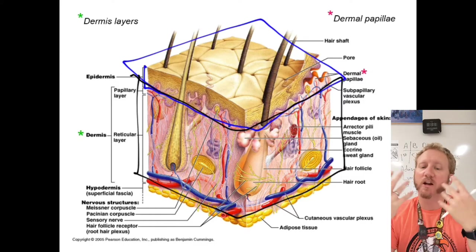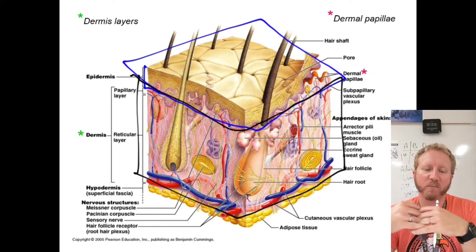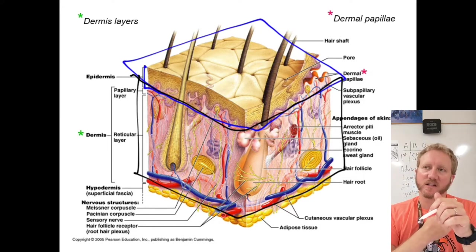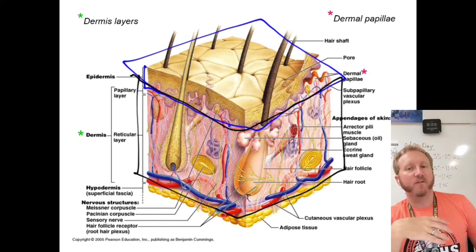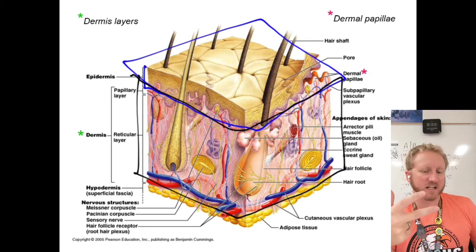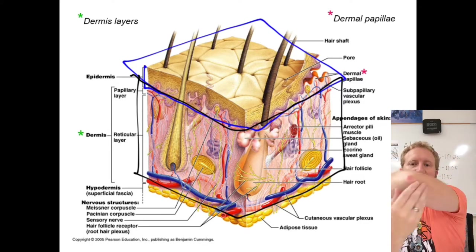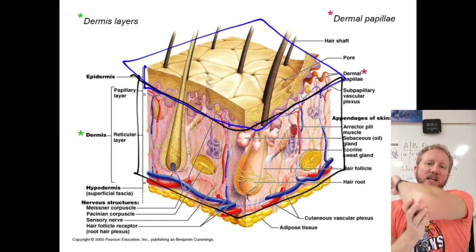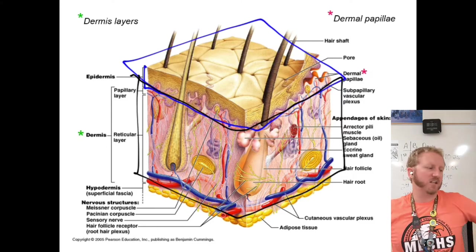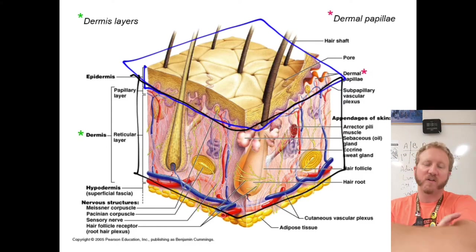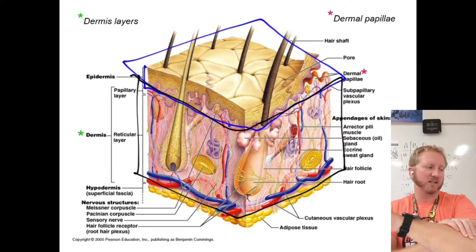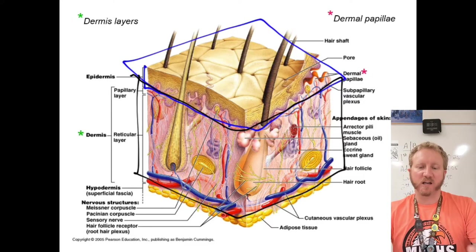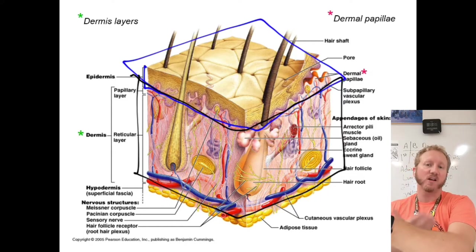The immune response is really mounted at the dermis layer, triggered by Langerhans cells. The dermis contains all three fiber types — collagen, elastic, and reticular — providing flexibility, especially at joints where we want movement without tearing. There are also lots of nerves and blood vessels, which is why scrapes and cuts bleed a lot.